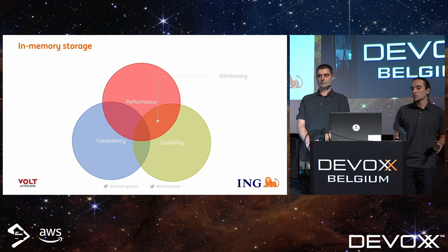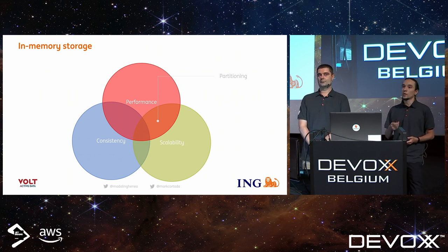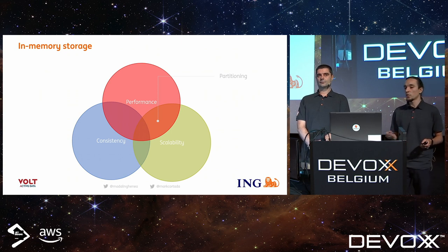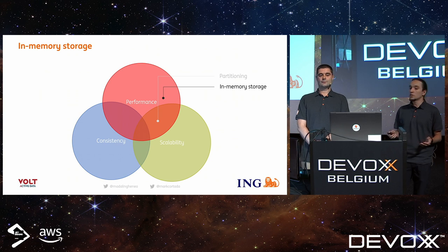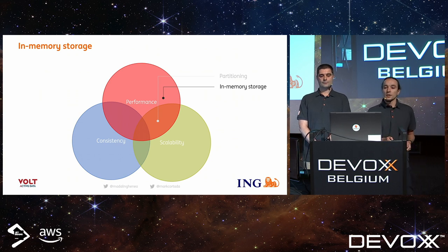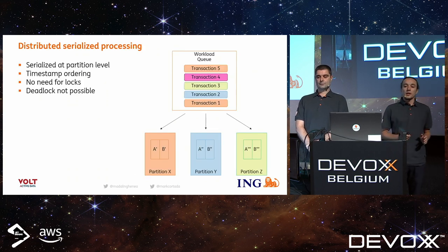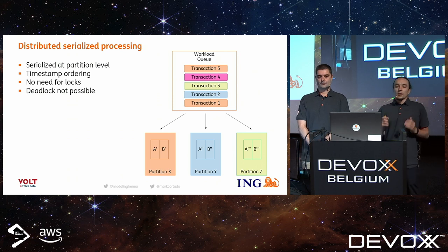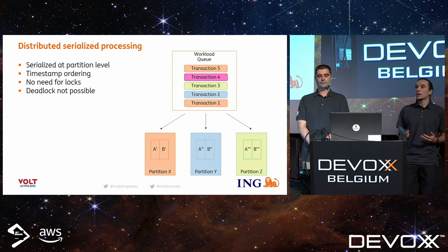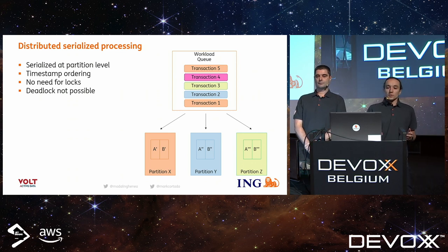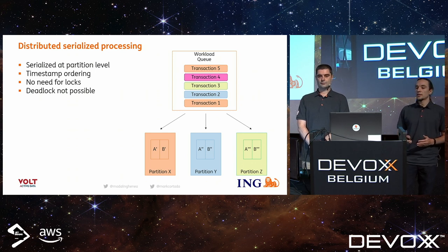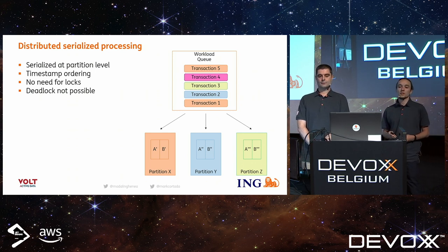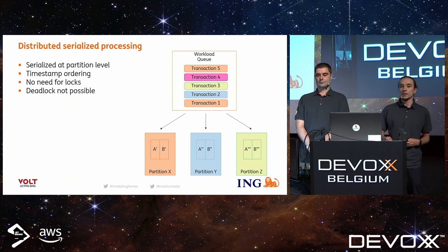Next we'll quickly talk about in-memory storage. Reading data from disk is quite slow, so a lot of systems use in-memory caching or in-memory storage to provide faster reads — and that's exactly what VoltDB does. In-memory storage improves performance. Next we will see how VoltDB achieves consistency. It does so using a distributed serialized processing mechanism, performing serialization at the partition level, meaning transactions that affect the same partition must be processed serially, one after the other.